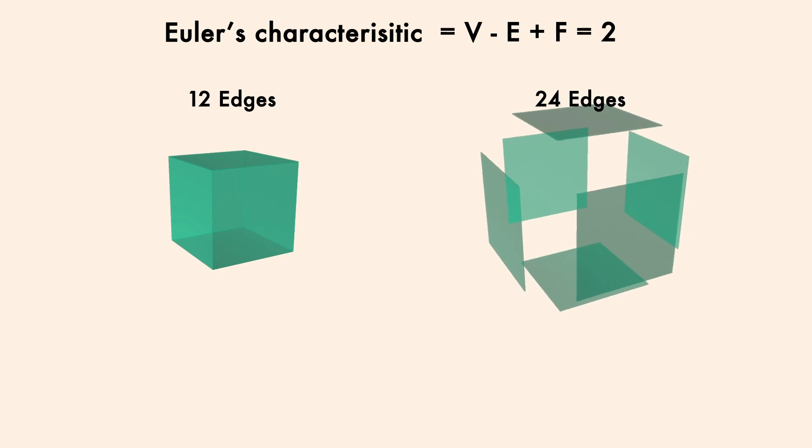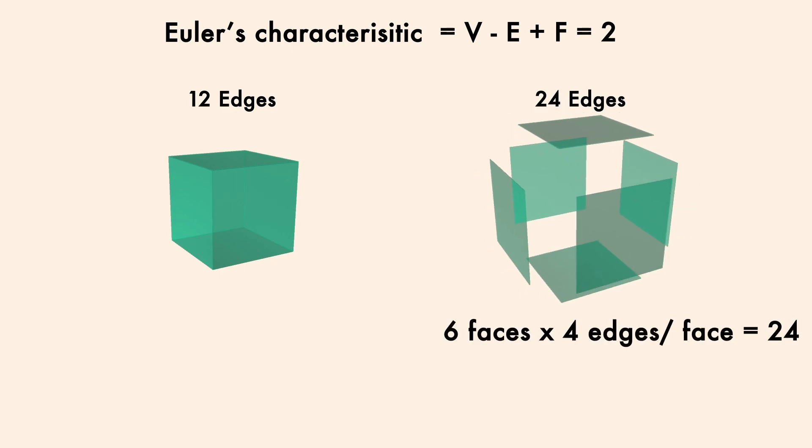But if we split it into its square faces, there are now 24 edges total, or the 6 faces times the 4 edges on each. You'll notice this also equals twice the number of edges on the original cube. We've doubled that value by splitting everything up.